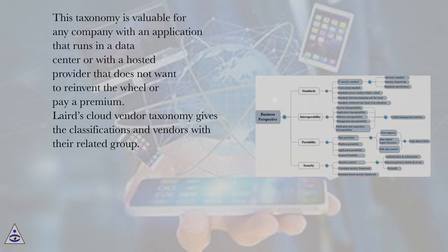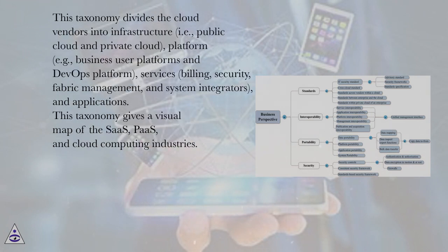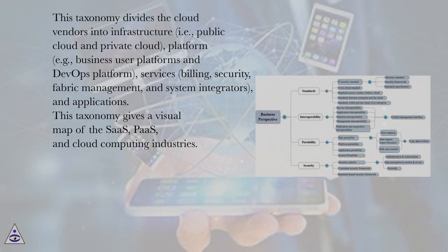Laird's cloud vendor taxonomy gives the classifications and vendors with their related group. This taxonomy divides the cloud vendors into infrastructure, i.e., public cloud and private cloud; platform, for example business user platforms and DevOps platform; services such as billing, security, fabric management, and system integrators; and applications. This taxonomy gives a visual map of the SaaS, PaaS, and cloud computing industries.